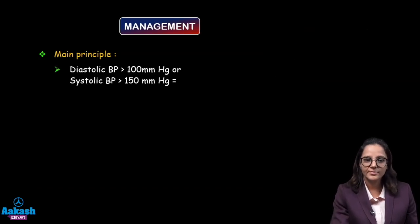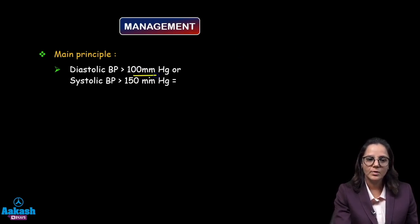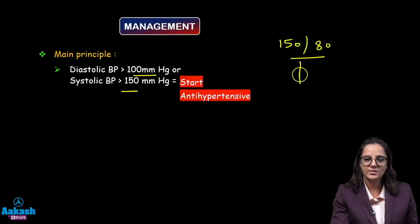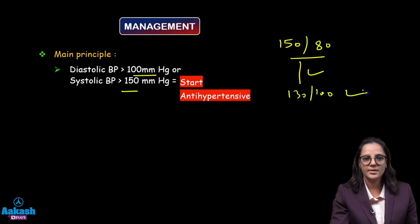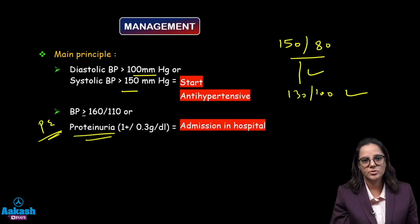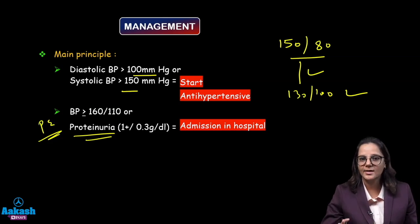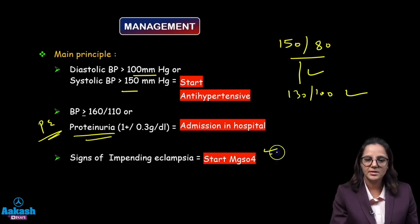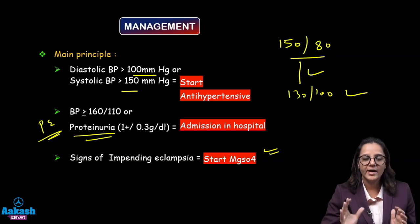The main management principle: if the diastolic blood pressure is more than 100 or the systolic is more than 150, start antihypertensives. If blood pressure is more than 160 by 110 or proteinuria develops — meaning all patients of preeclampsia — admit to hospital. For all signs of impending eclampsia, start magnesium sulphate. This is the crux of management of hypertension in pregnancy.